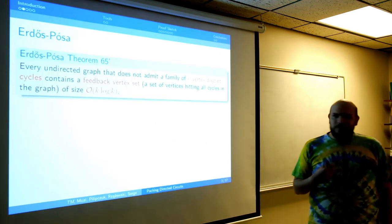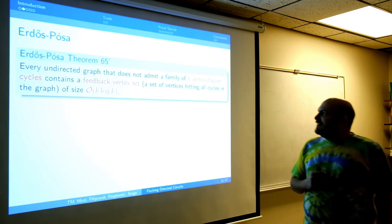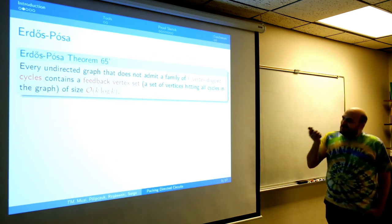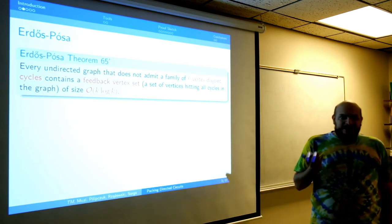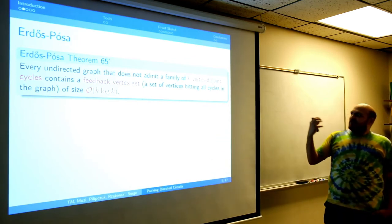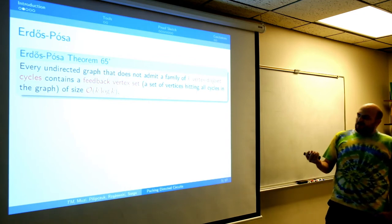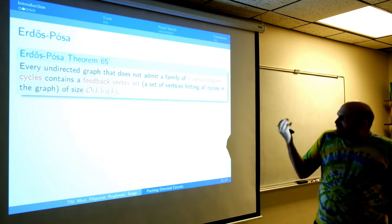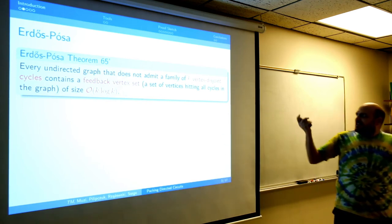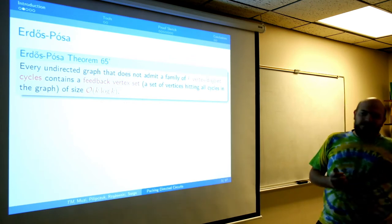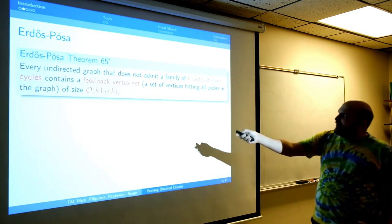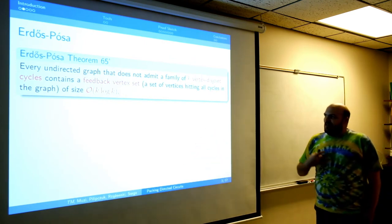Let me show you what problem we will be solving today. Let's start in the 1960s with the famous result of Erdős and Pósa. They showed a relation between packing of vertex-disjoint cycles and feedback vertex set. Now we are in classical graphs, and what they showed is that if the graph doesn't contain a family of k vertex-disjoint cycles, then the feedback vertex set is bounded by k — in the order of k log k.